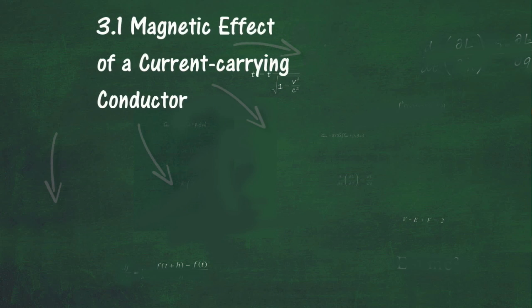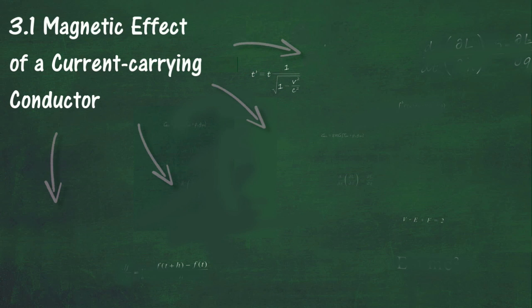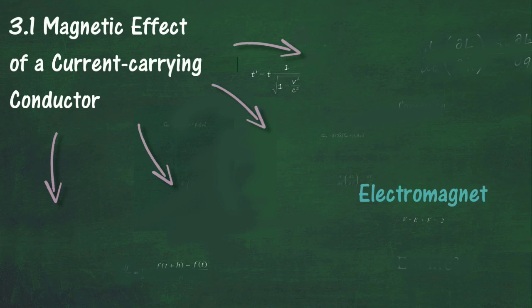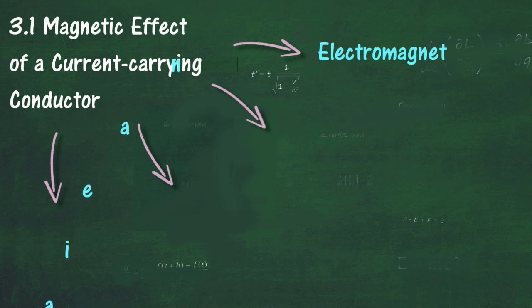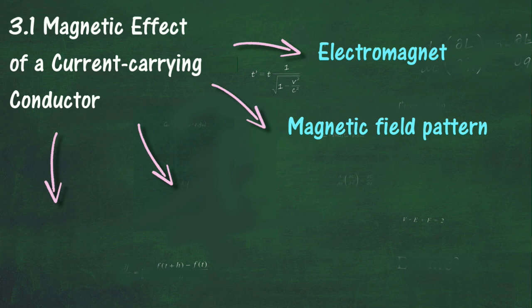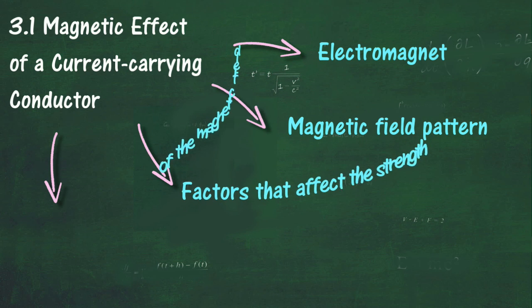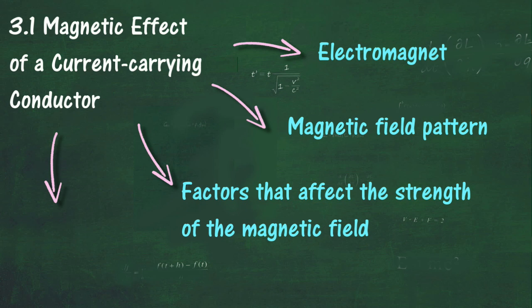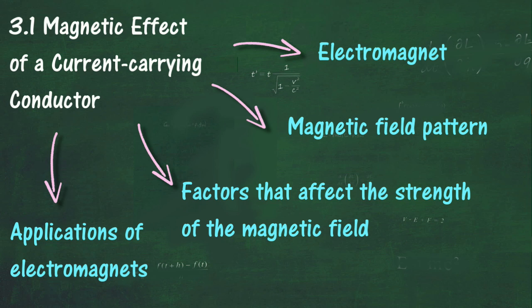In section 3.1, we will learn about the magnetic effect of a current-carrying conductor. At the end of this section, you should be able to: state what an electromagnet is, draw the magnetic field pattern due to a current in a straight wire, coil and solenoid, plan and conduct experiments to study factors that affect the strength of the magnetic field of an electromagnet, and describe applications of electromagnets.